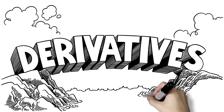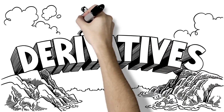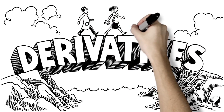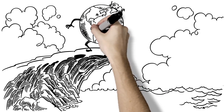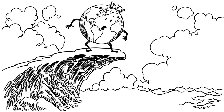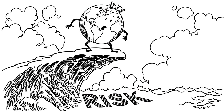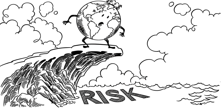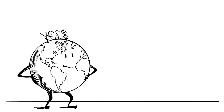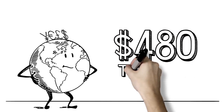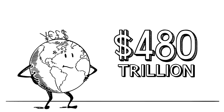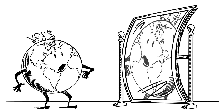We've talked about how many businesses reduce risk by using derivatives. But don't derivatives also increase the risk to our global financial system? After all, the notional amount outstanding of the swaps market is $480 trillion — that's about twice the amount of wealth in the whole world.